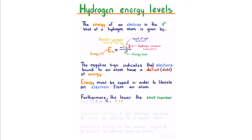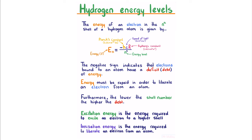Furthermore, the lower the shell number, the higher the debt. Excitation energy is the energy required to excite an electron to a higher shell, whereas ionization energy is the energy required to liberate an electron from an atom entirely.